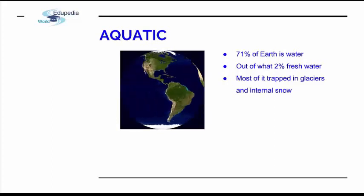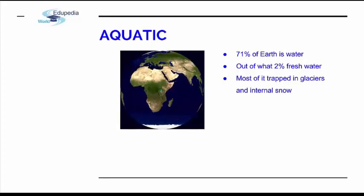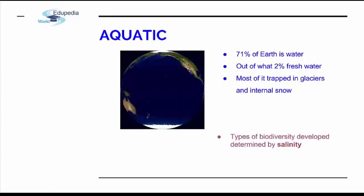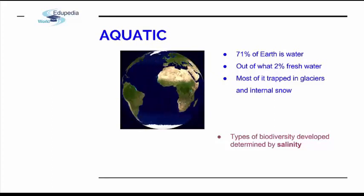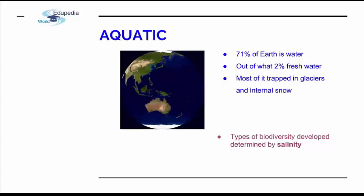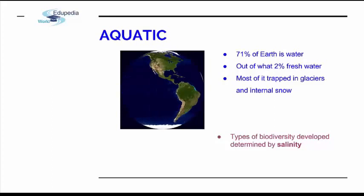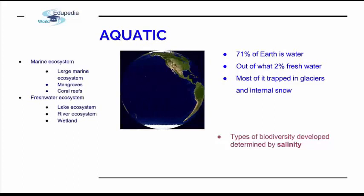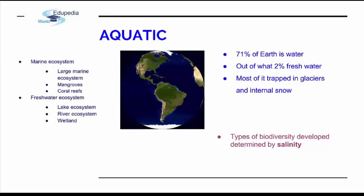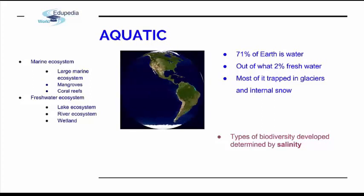So we're going to talk about aquatic ecosystems and their biodiversity. What determines biodiversity in water is mostly salinity — it's the factor that influences most the types of biodiversity that will develop in a certain aquatic environment. Talking about salinity and aquatic environments, they can definitely be divided into two main groups: marine or freshwater. And all of them have subdivisions.